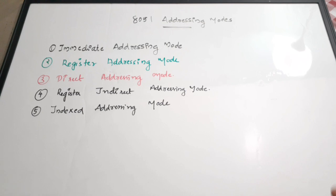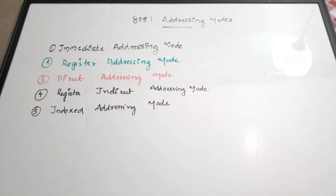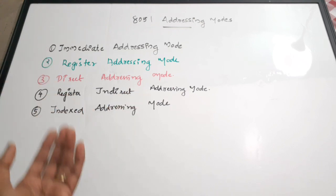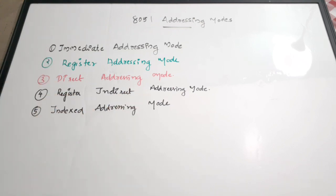A lot of questions come from this area. Sometimes they will ask how many types of addressing modes there are, sometimes they will give some instructions and you have to find what type of addressing mode it is, or some programming snippets will be given. This is especially important for competitive examinations. We are going to see all five addressing modes in detail, starting with immediate addressing mode.